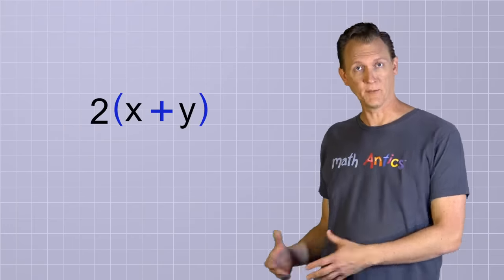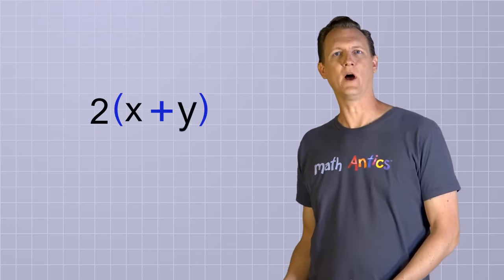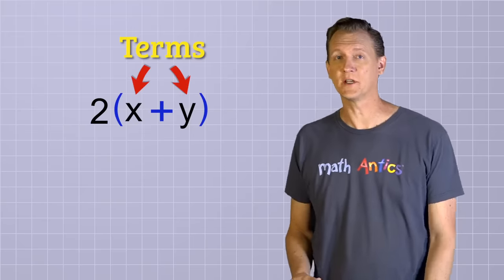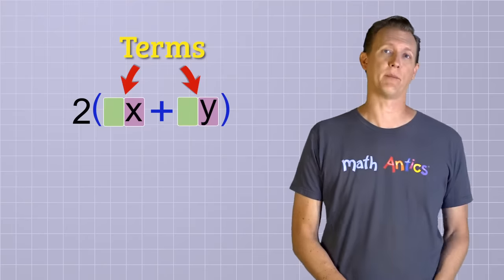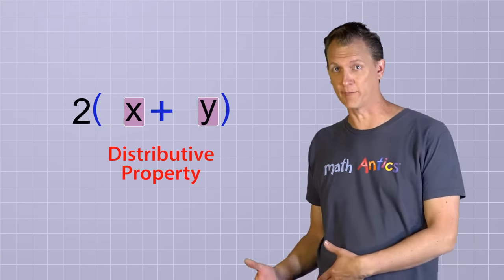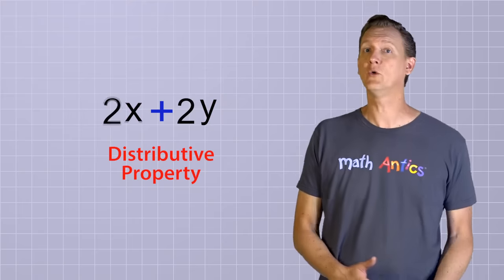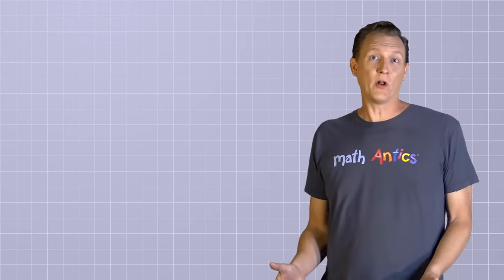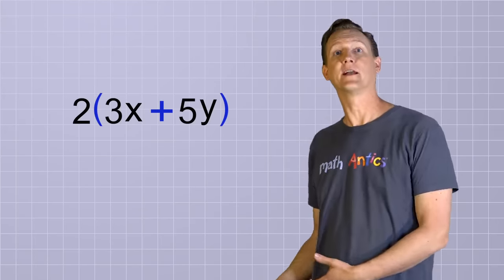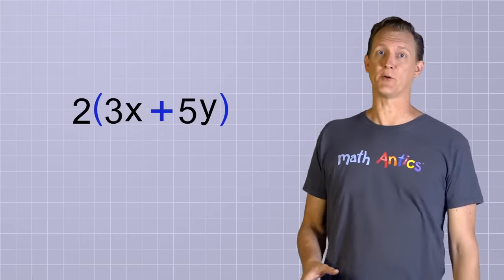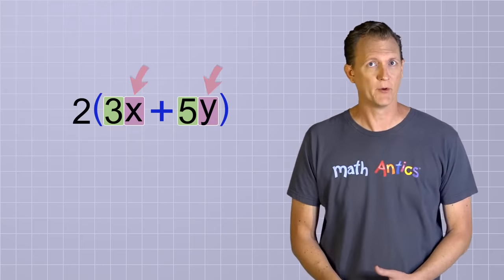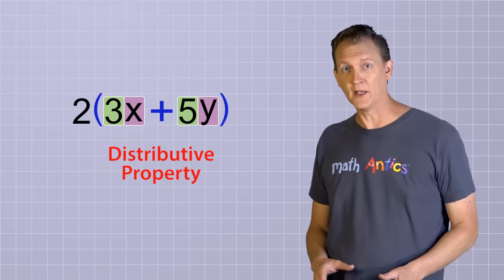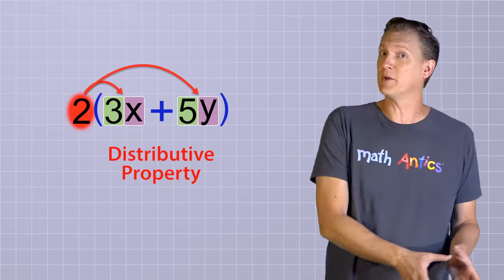Each of the terms has a variable part but no number part. And if we apply the distributive property to the group, we get the equivalent form 2x plus 2y. But what if the polynomial was just a little bit more complicated, like 2 times the group 3x plus 5y? In this expression, each of the terms in the polynomial does have a number part that is being multiplied by the variable part. But we can still use the distributive property to distribute a copy of the factor 2 to each term in the polynomial.